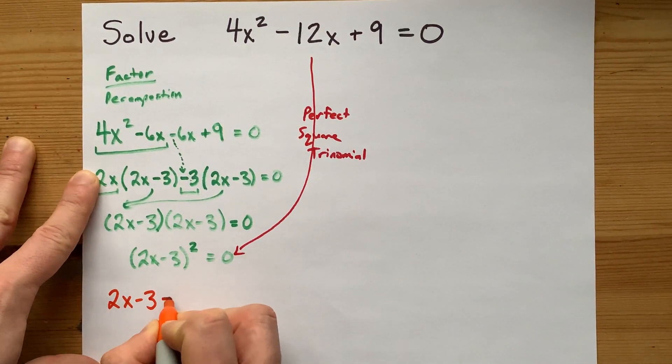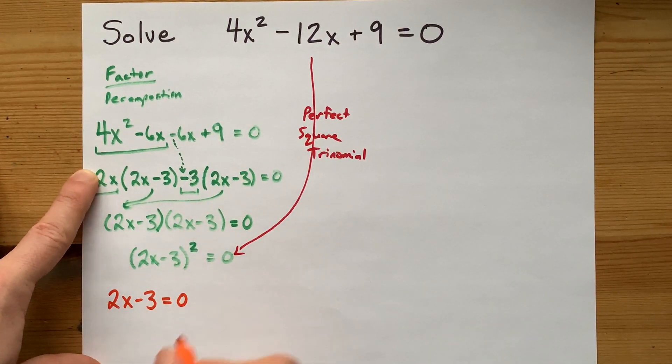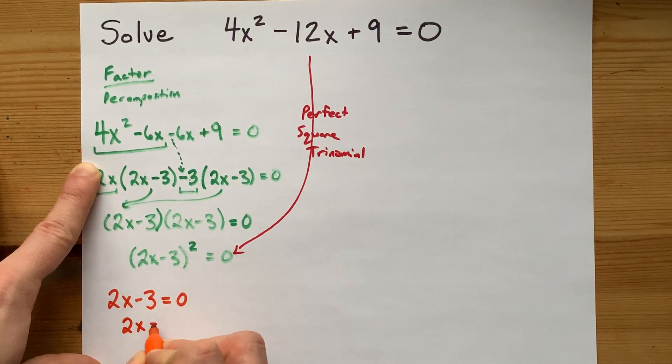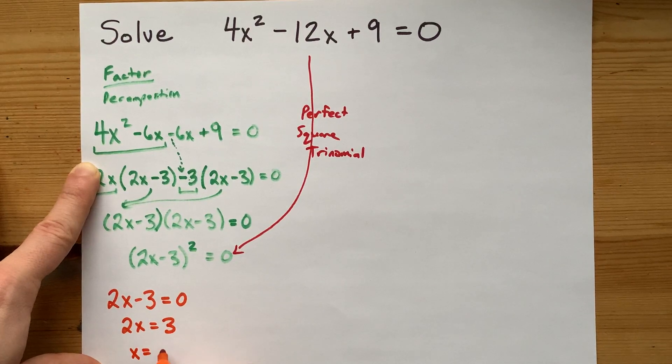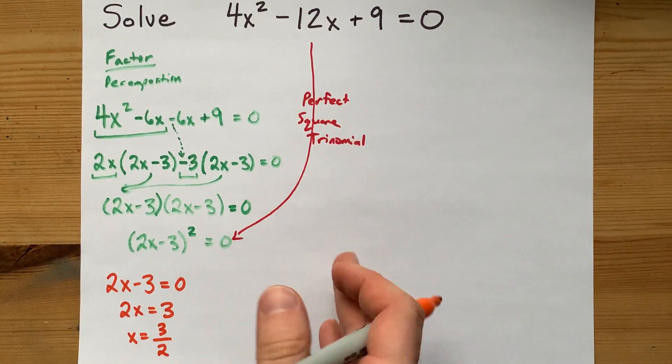So 2x minus 3 has to be 0. And actually, that's the exact same thing. So I only have to write it once. I'm going to move minus 3 to the other side to make it plus 3. And I'm going to divide both sides by 2. So x is 3 halves. Done. That's the solution. There's only one x-intercept here.